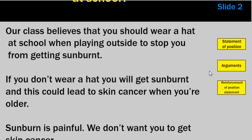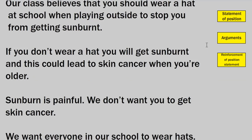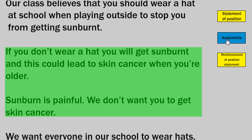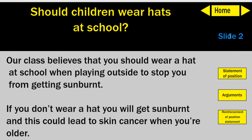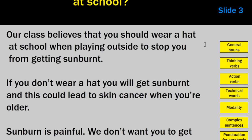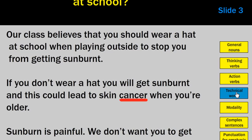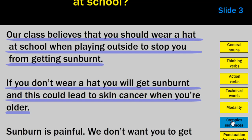Mouse off it and it disappears, and you can start talking about the arguments. When you do, you might like to mouse over arguments and highlight where they are in the text. Mouse off that and start talking about the reinforcement of position statement and highlight it when you do. Then we can go to the next slide. On this slide we see the language features of the text, so you can mouse over and see the general nouns, the thinking verbs, the action verbs, the technical words, the modality, complex sentences and so on.